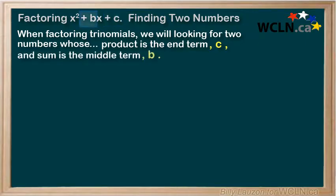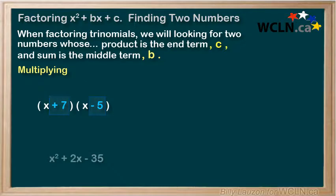While multiplying is the opposite of factoring, we're going to take a look at distributing the binomials below, highlighting the positive 7 and the minus 5. These, in fact, are the two numbers. Let's see the role they play when we distribute.